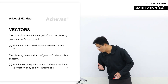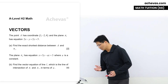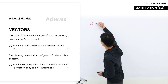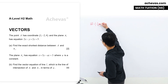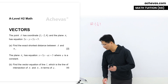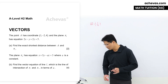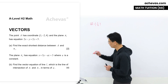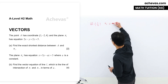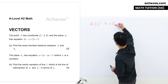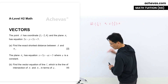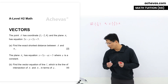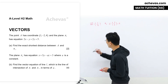In this question, we are given the coordinates of point A: (1, -2, 4). I'm going to rewrite it into the column vector form: OA = (1, -2, 4). We are also given the Cartesian equation of π₁: 2x - y + 2z = 5. I'm going to rewrite it into the scalar dot product form: r · (2, -1, 2) = 5. Part A wants us to find the exact shortest distance between point A and the plane π₁.